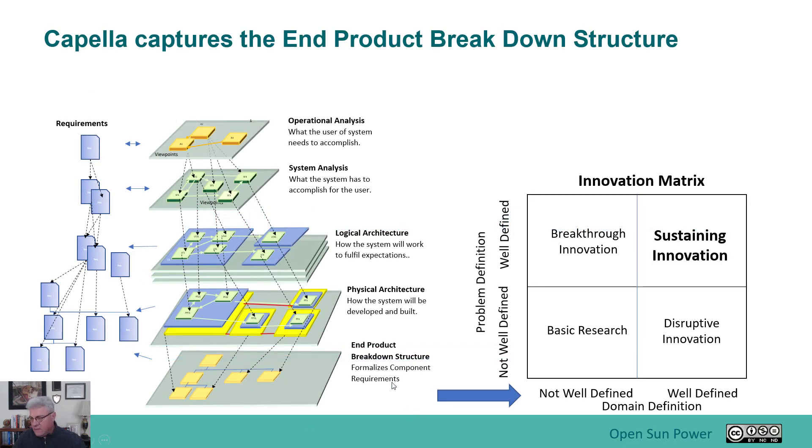The End Product Breakdown Structure is the very last phase. Now we're actually trying to decide how we're going to build, configure, and maintain from a construction perspective the design that we have, so we can start figuring out what's going to be built and maybe even by who.